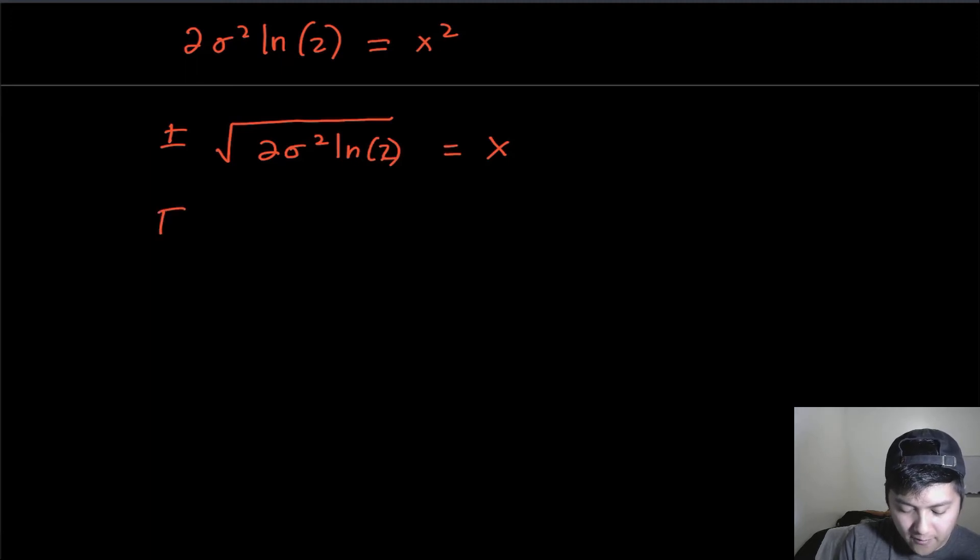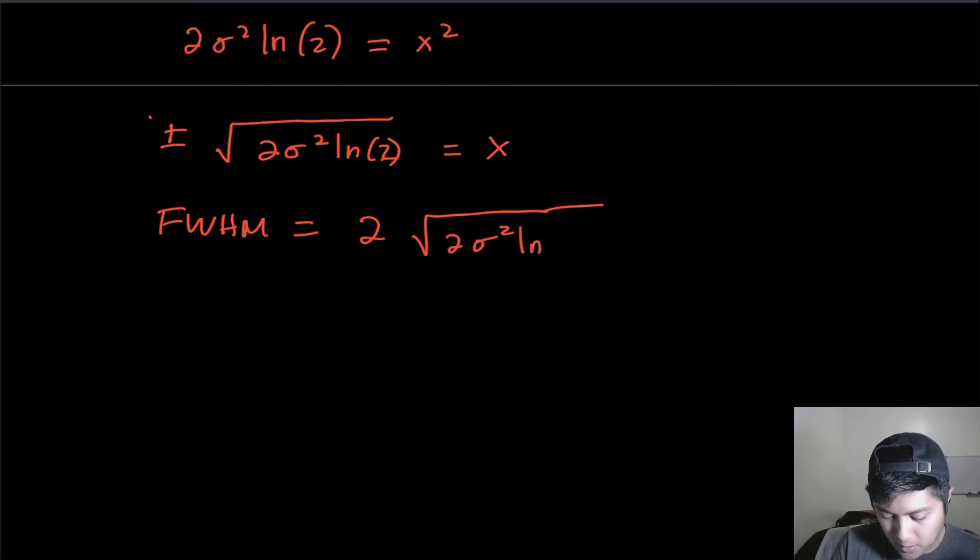So the full width at half max is equal to two times the magnitude or the absolute value of that quantity right there, which is just square root of 2 sigma squared log of 2, which you can conveniently write as 2.3548 sigma.